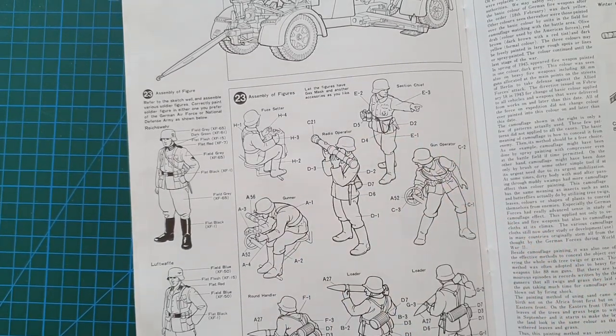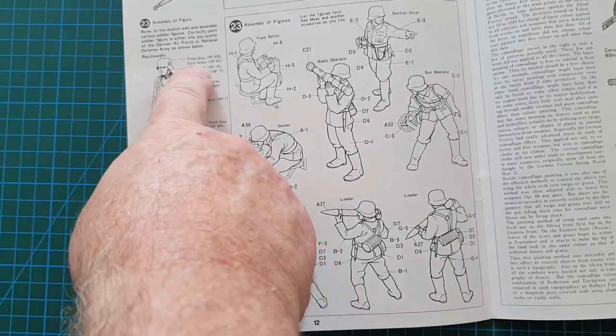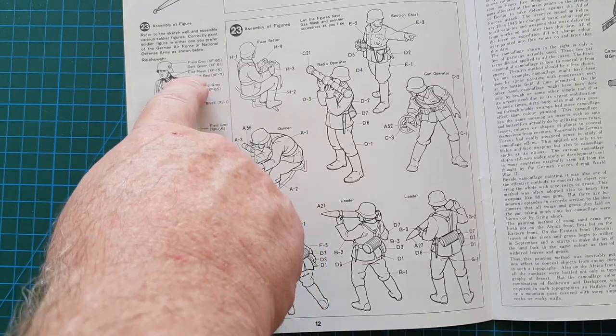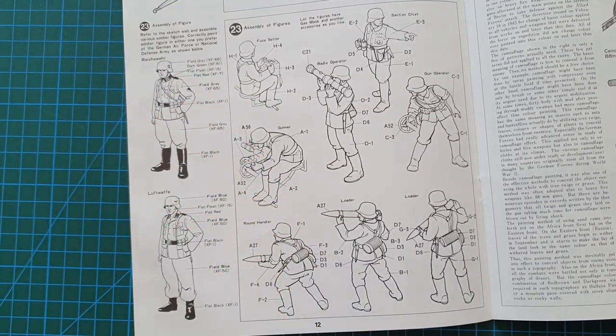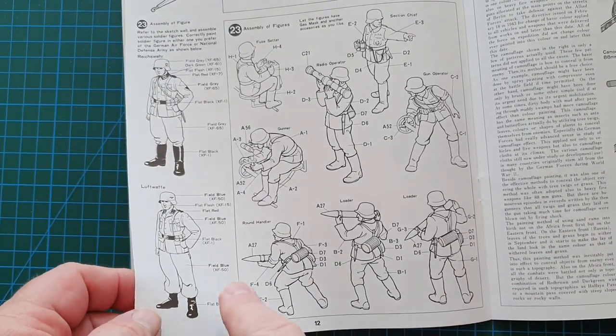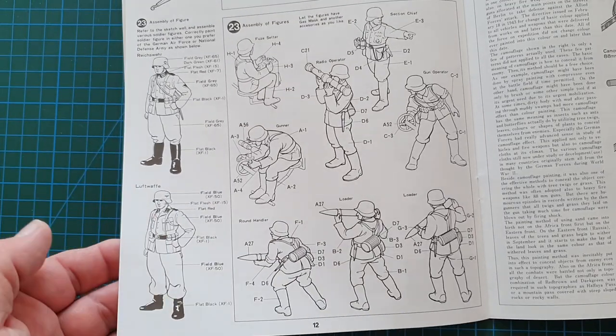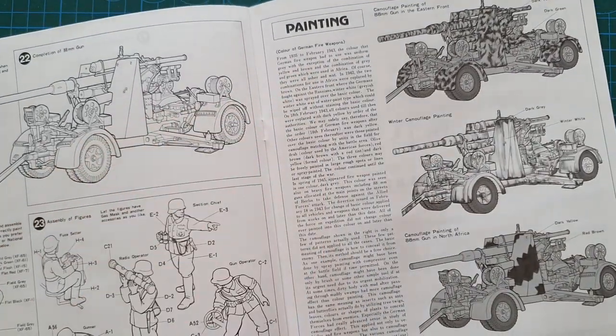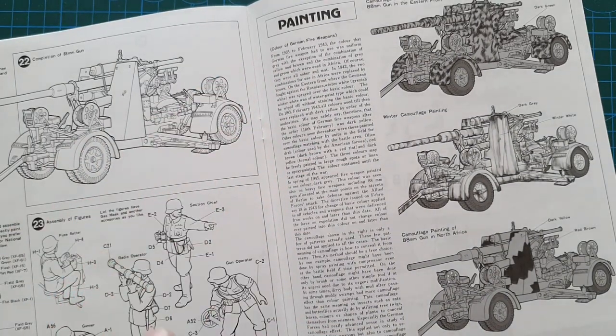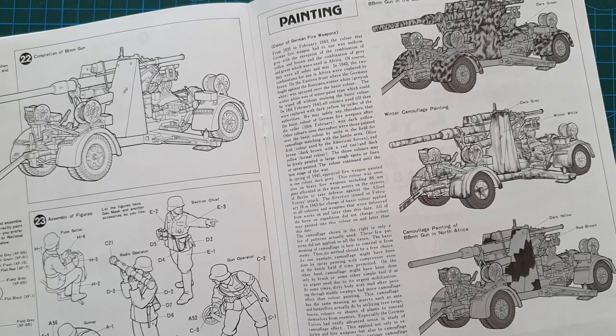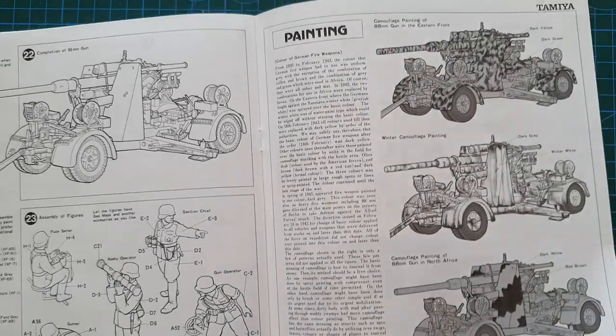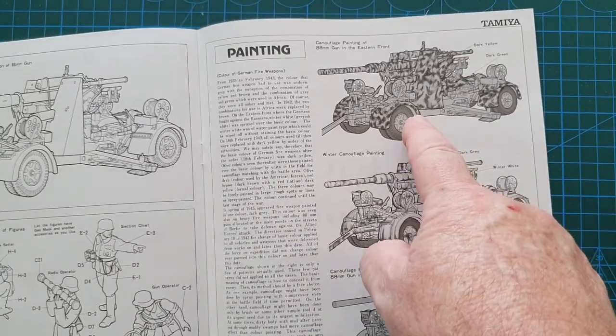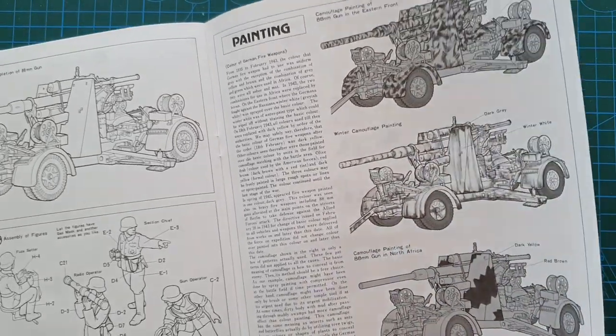Then you've just got the assembly of the crew. As you can tell this has been updated with Tamiya's colors, although there's no color chart included, but it does tell you what color: field gray, flat black, etc. to paint the crew. Then we get to painting and it gives you a complete rundown of how they were painted: overall dark gray, overall dark yellow and camouflage, North Africa, winter camouflage which is of course white, and Eastern Front which would be dark yellow and green.